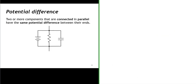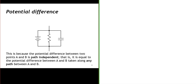Now let's talk about the potential difference of components connected in parallel. Two or more components that are connected in parallel have the same potential difference between their ends. This is because the potential difference between two points A and B is path independent — it is equal to the potential difference between A and B taken along any path.